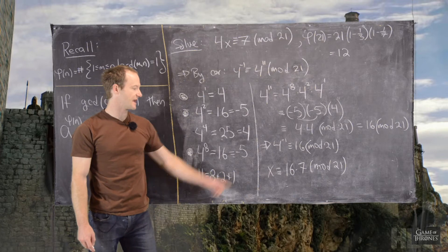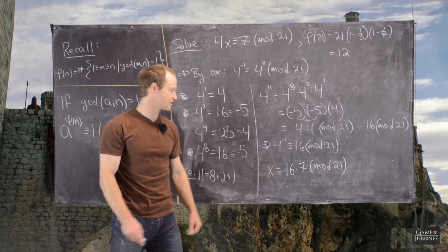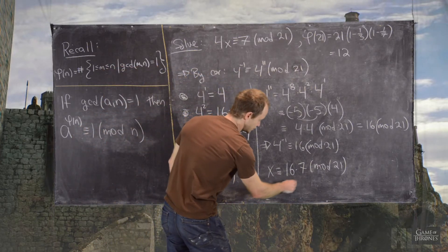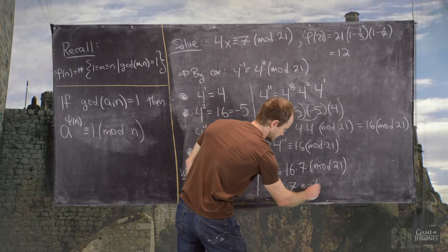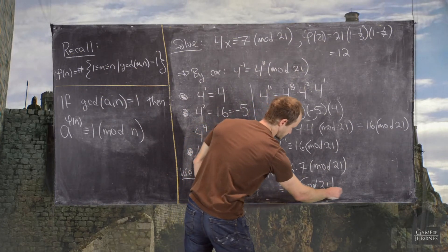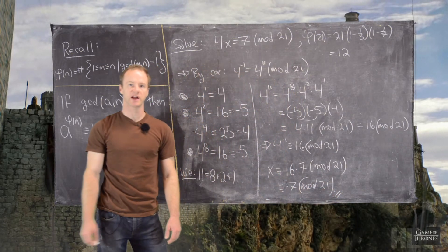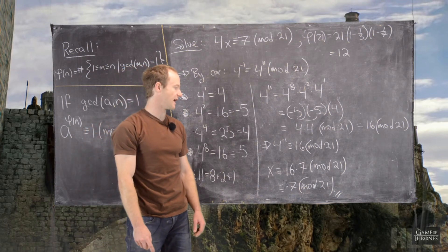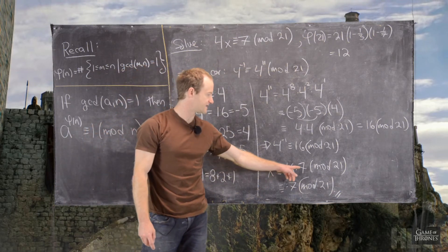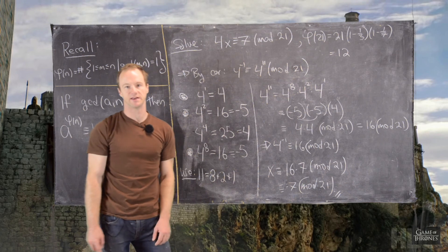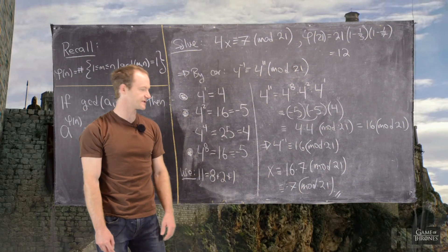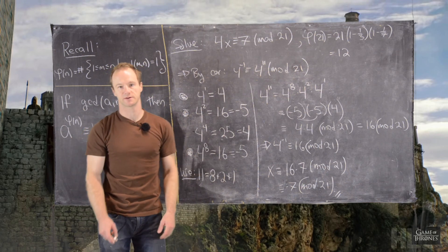And then, you can check that 16 times 7 mod 21 is, in fact, just 7 mod 21. Which seems like a trick, but this is something that could happen if 7 divides 21, and it does. So, that's why something like that happens. Okay. So, that's the final answer.